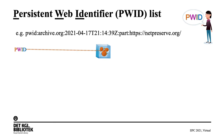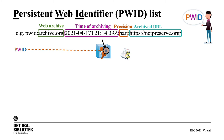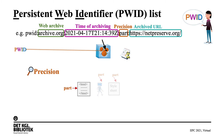Now let's look at the persistent web identifier list, also called PUD list. A PUD consists of four parts: the web archive, the type of archiving in readable standardized form, and the archived URL. This is exactly the information needed to uniquely identify any element in any archive. Furthermore, the PUD has a precision part. The precision specifies what the PUD covers — it can either be a part, which means a single file, and in case it is an HTML file, it would render without its sub-elements.